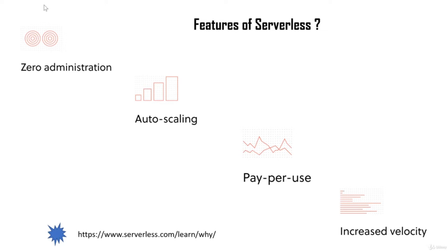The second key feature is auto scaling. Auto scaling makes it possible for you to ramp up your infrastructure as needed. As your application keeps growing in size, a serverless application will auto scale and use extra resources or extra infrastructure to make sure your application is running properly.